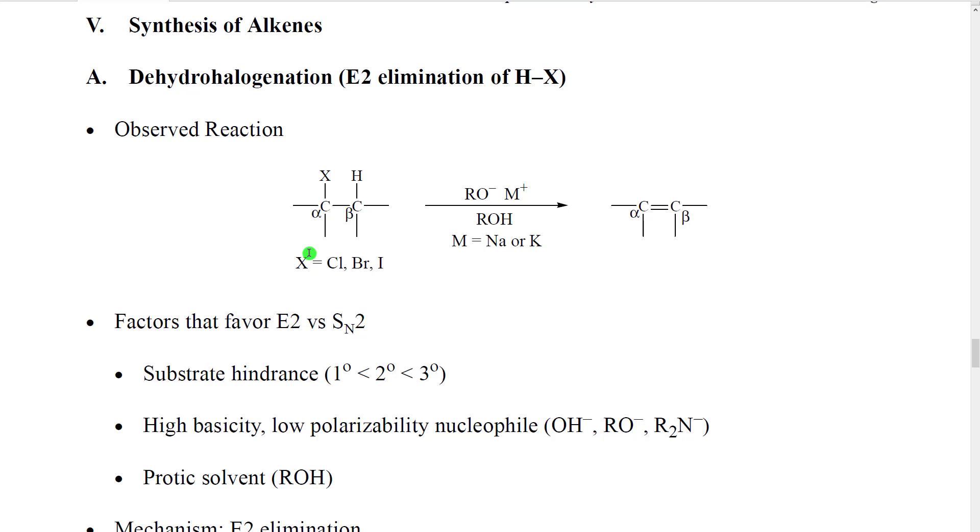We're now going to look at how to make alkenes. Making a molecule is often called synthesizing a molecule, and so the tools that are used to make alkenes are called the synthesis of alkenes. We're going to look at two main reactions that are used to do this. I would say these are by far the two most important molecules that are used to make an alkene on demand when we need it.